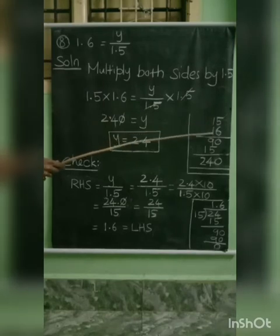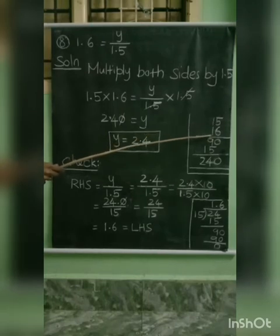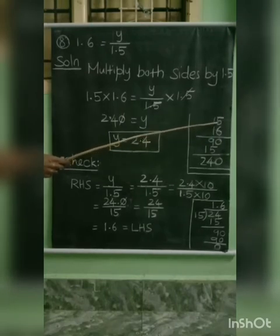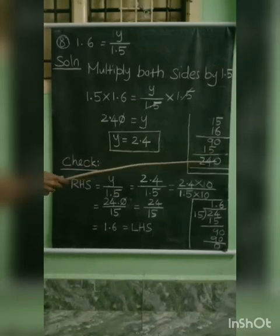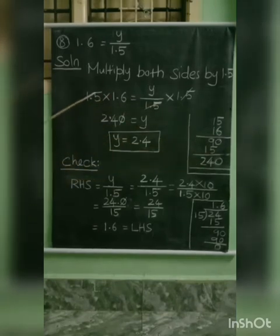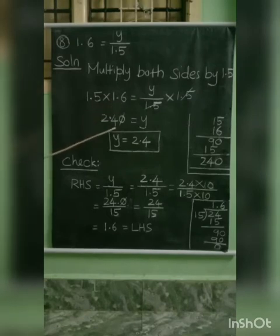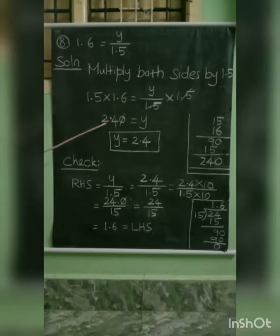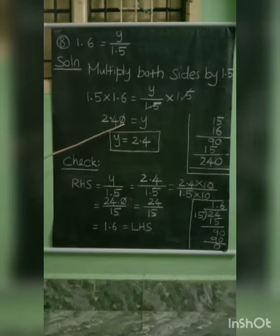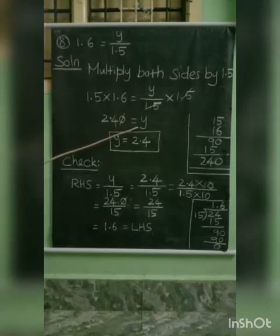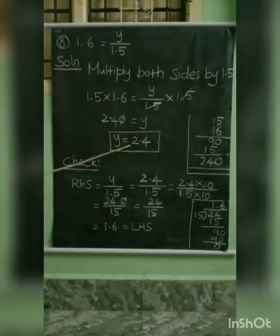Ignoring the decimal point, we multiply 15 by 16. The answer is 240. In the two numbers 1.5 and 1.6, the total decimal parts are 2. So, the answer has a decimal point placed 2 digits from the right: 2.40. The trailing zero has no value, so y equals 2.4.